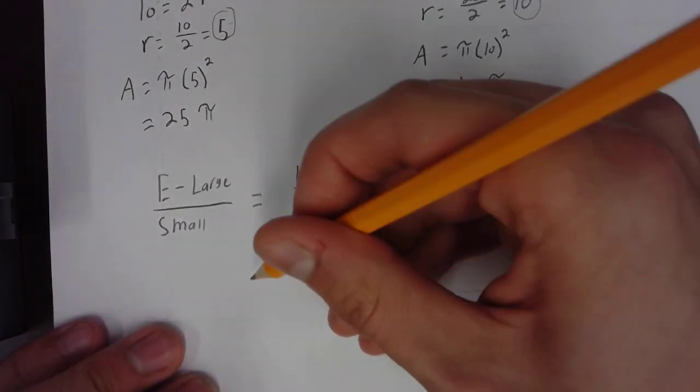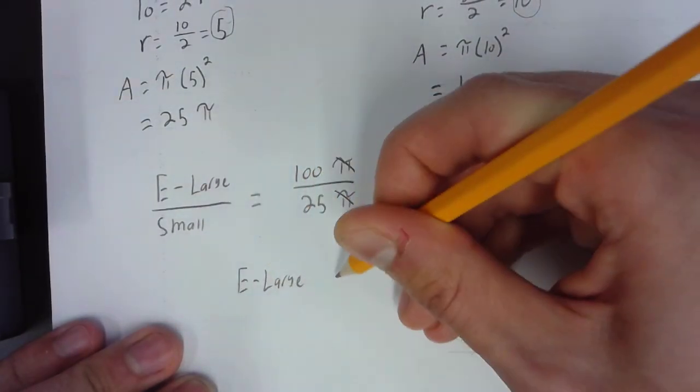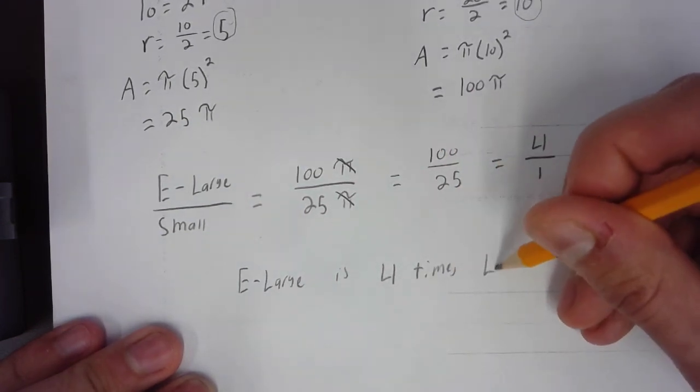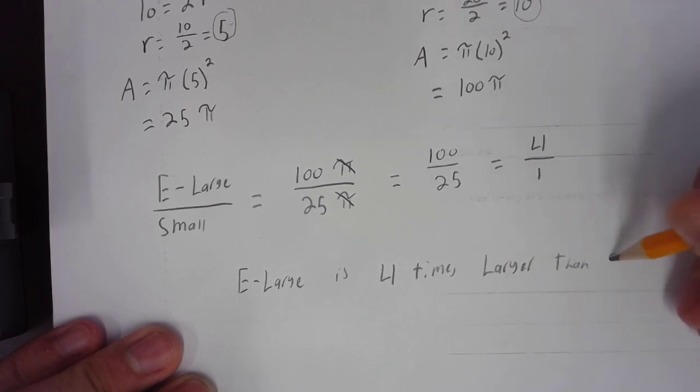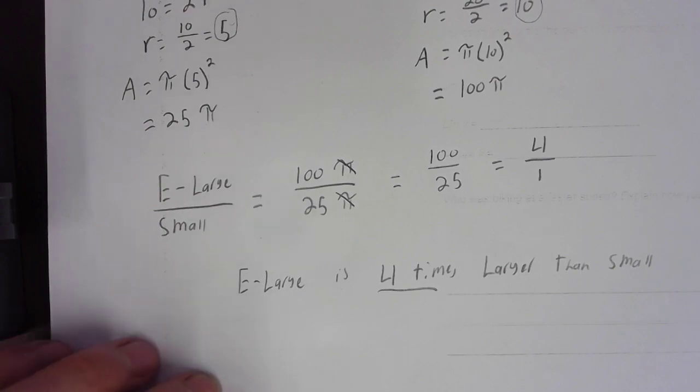So, we know that the extra-large is 4 times larger than the small. Alright? There it is.